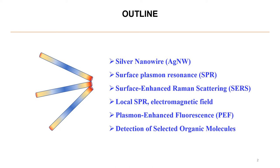As known, Raman spectroscopy provides detailed information on molecular fingerprints, even though the Raman scatter intensity is very weak. Here, we prepare silver nanowires to manipulate surface plasmons, resulting in enhanced Raman scatter intensity. Localized surface plasmons enhance the electromagnetic field around the nanostructures for plasmon-enhanced fluorescence study. We utilize the properties of nanowires to detect synthetic organic molecules such as pesticides.